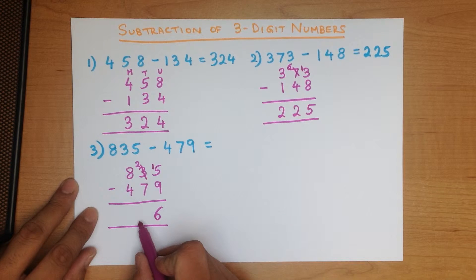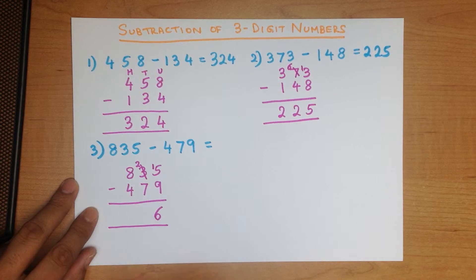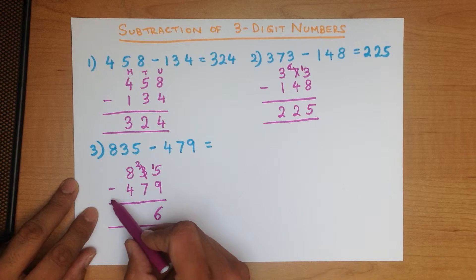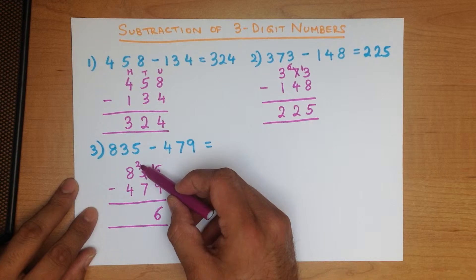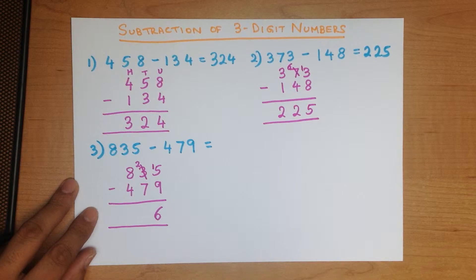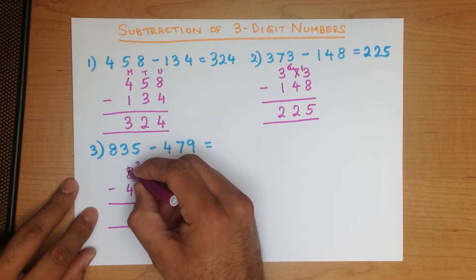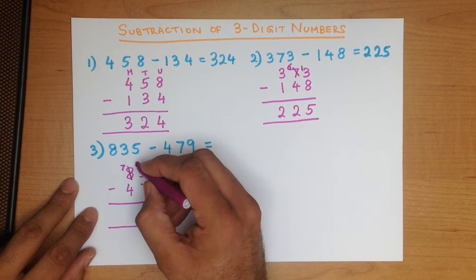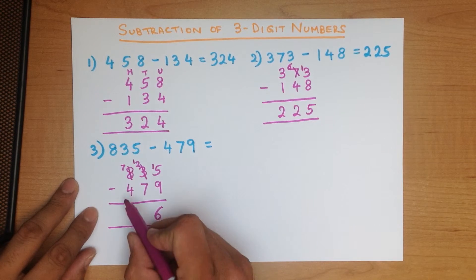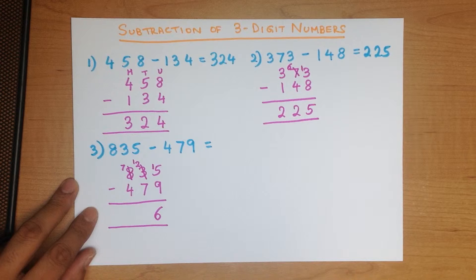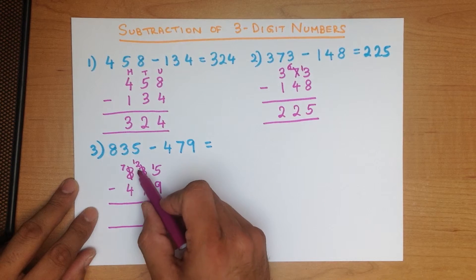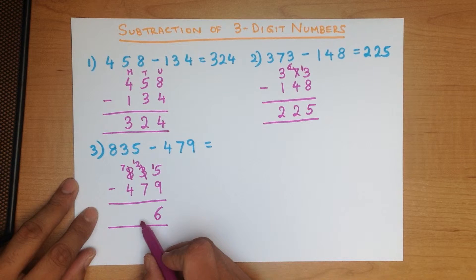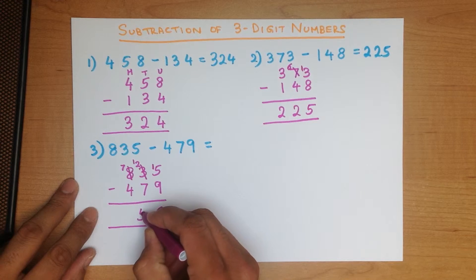Now we do the tens column. The 3 has become a 2, so what is 2 minus 7? We can't do this one either because 2 is smaller than 7. So we take a 100 from the hundreds column — the 8 becomes a 7, and we put the 1 over here. This column has now become 12 minus 7, and 12 is larger than 7, so 12 minus 7 is 5.